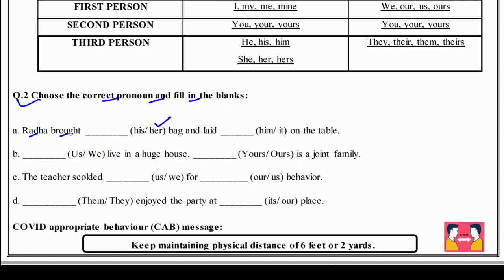तो हम use करेंगे 'her' — Rathore brought her bag and left 'it' on the table — क्योंकि वो non-living thing है। फिर: We live in a huge house — यानि हम एक बहुत बड़े घर में रहते हैं — and ours is a joint family — ours इसलिए क्योंकि we के साथ ours लगाते हैं — यानि हमारी joint family है।